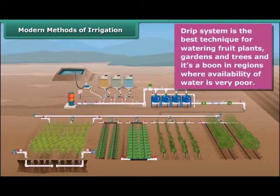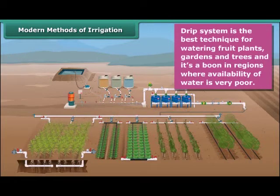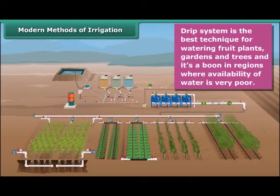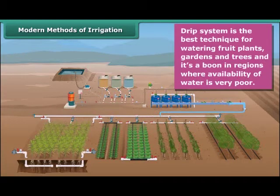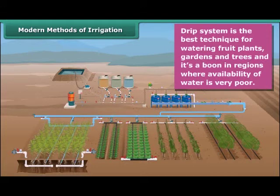Next is a drip system. In this system, the water falls drop by drop just at the position of the root. It is the best technique for watering fruit plants, gardens and trees. Water is not wasted at all, and hence we can say that it is a boon in regions where availability of water is very poor.